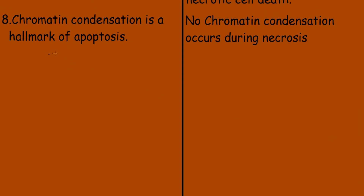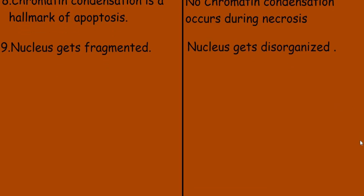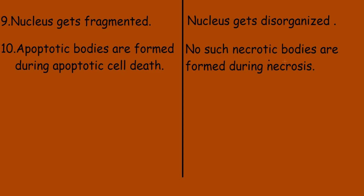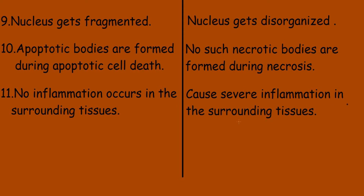The nucleus gets fragmented during apoptosis, while the nucleus gets disorganized during necrosis. Apoptotic bodies are formed during apoptotic cell death, while no such necrotic bodies are formed during necrosis. No inflammation occurs in surrounding tissues during apoptotic cell death, but necrosis causes severe inflammation in the surrounding tissues.